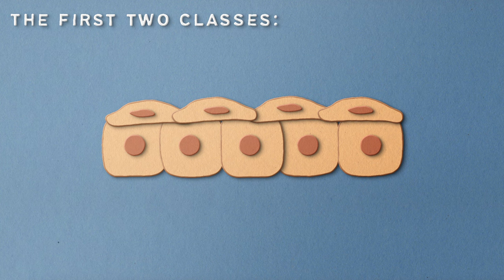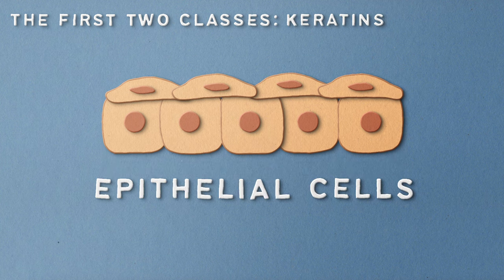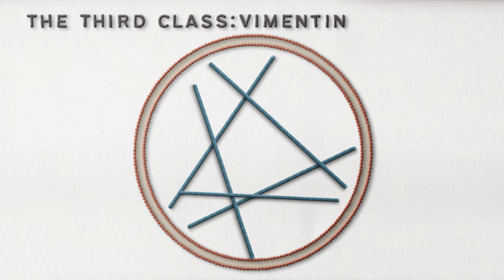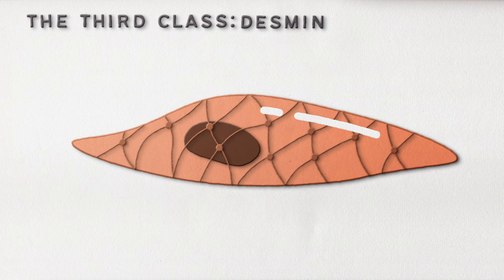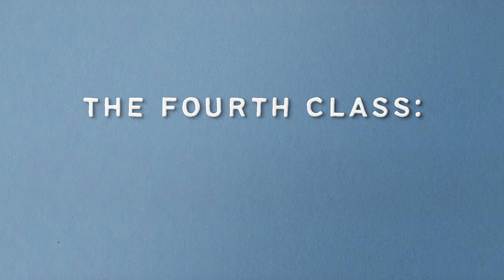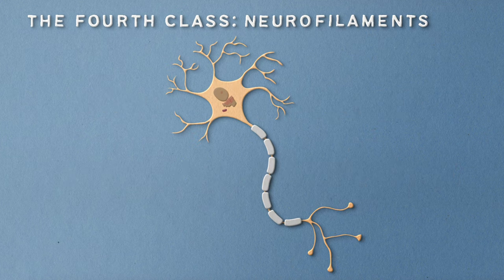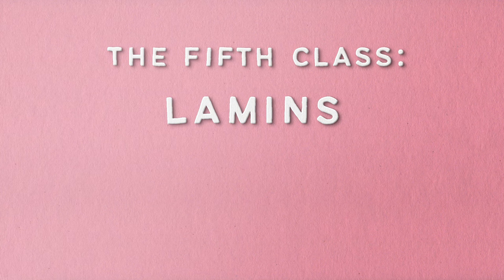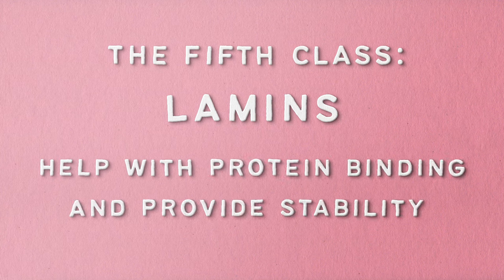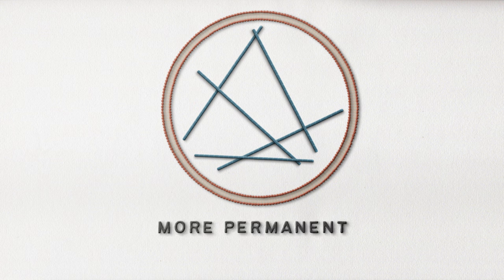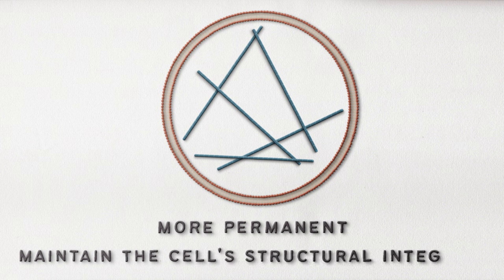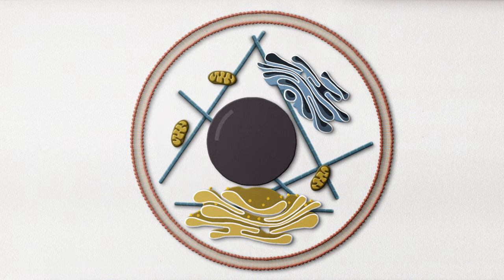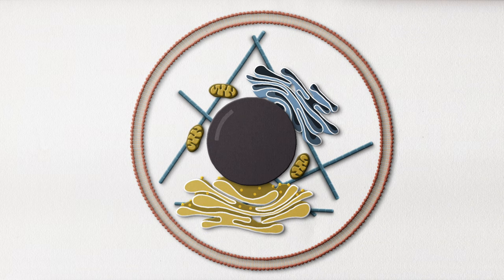The first two classes of IFs are keratins, which are expressed in epithelial cells. The third class of IFs are desmin and vimentin. Vimentin is a major player in providing cell support and regulation, and desmin is a big component of muscle cells. The fourth class of IFs are neurofilaments, which are present in motor neurons and help shape cells. The fifth and final class of IFs is lamins, which help with protein binding and provide stability. Intermediate filaments are a more permanent aspect of the cytoskeleton, helping maintain the cell's structural integrity and keeping the nucleus and organelles where they belong. They really are the glue that holds everything together — like your skin, for example, which would probably be a lot less strong without them.